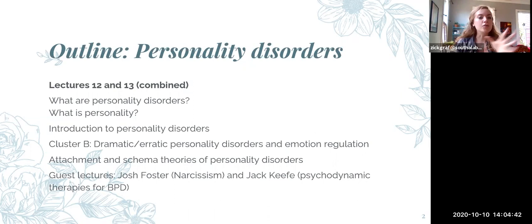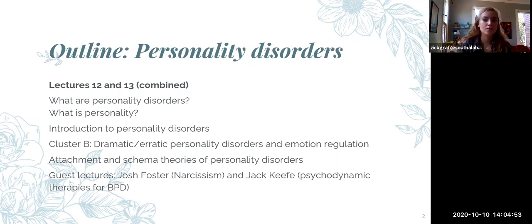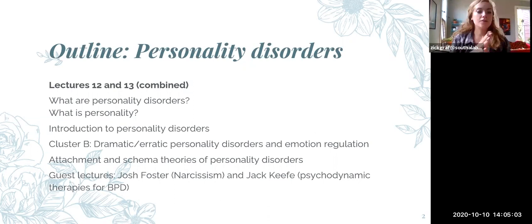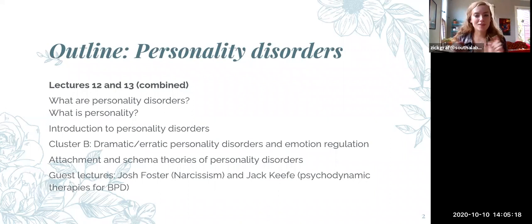The new content for today and Tuesday — the two lectures — will be an exploration of the cluster B personality disorders according to the splitting theory, which says that personality disorders are more similar to other personality disorders in their cluster than they are to each other. Then I will briefly review the attachment and schema theory of personality disorders, which is a lumping theory that says that personality disorders are more similar to each other than they are to symptom disorders. There are going to be two guest conversations with this lecture, but neither of them is edited yet, so they're not going to be in this video. They'll be posted alongside the lecture videos, hopefully by Monday at the latest, but ideally Sunday.